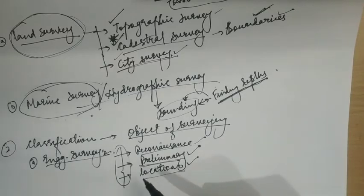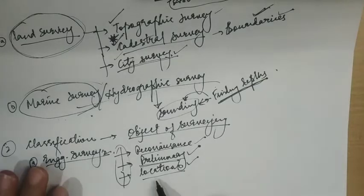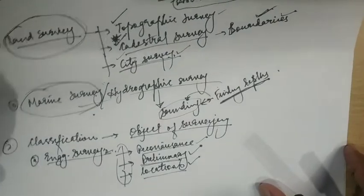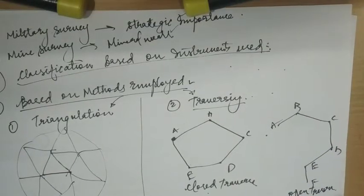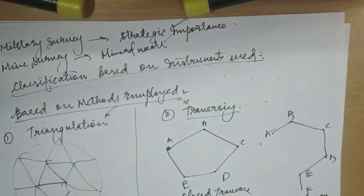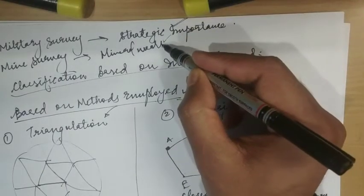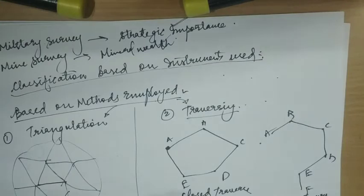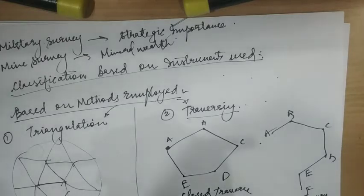Preliminary survey is used for collecting more information to estimate the cost of the project. Location survey is used to set the work on the ground. Military survey is a type of survey meant for working out points of strategic importance. Mine survey is used for exploring mineral wealth. Geological survey is used for finding different strata in the earth's crust. Archaeological survey is used for unearthing relics of antiquity.